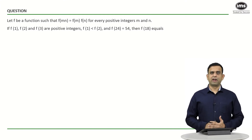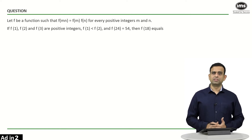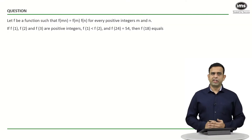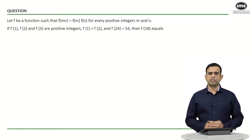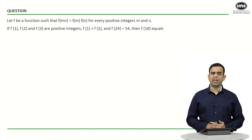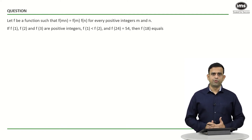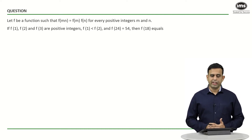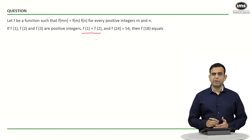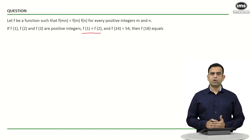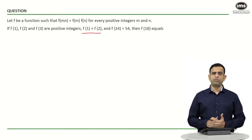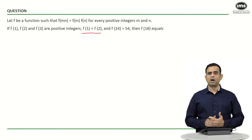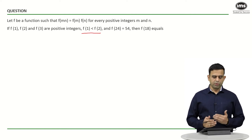Hi all, welcome to the Best of CAT series by IMS. I am Parmeshwar, and today we look at a question on functions. Kindly solve the sum before you resume the video. In today's sum, it is given that f is a function such that f(m×n) = f(m)×f(n) for every positive integer m and n. Further, f(1), f(2), and f(3) are positive integers with the condition that f(1) < f(2), and f(24) = 54. The objective is to find f(18).